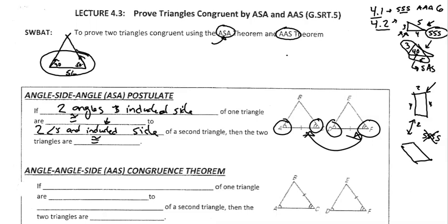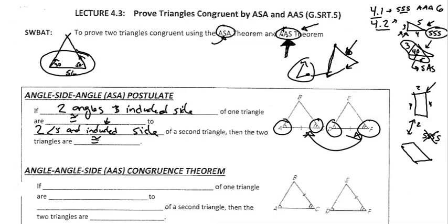The next one is Angle-Angle-Side. It's very difficult to draw without software. It's basically: if you had an angle, then another angle, and then a side — and this side had to be that exact length — how many triangles could be made? There's only one possible triangle that can be created if you have an angle, then an angle, and then a side, meaning the side is not between the two angles as it is with ASA.